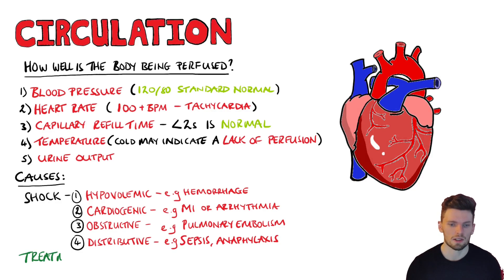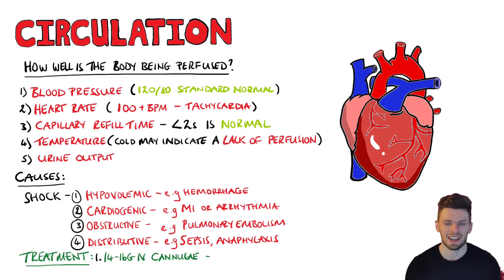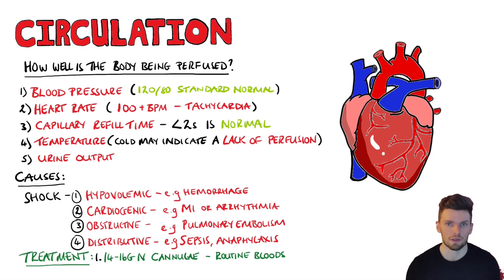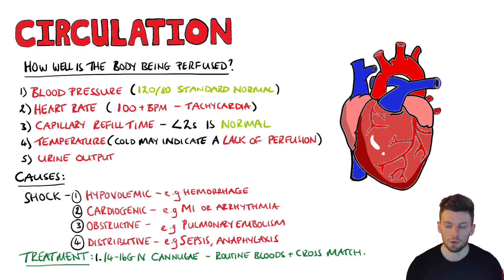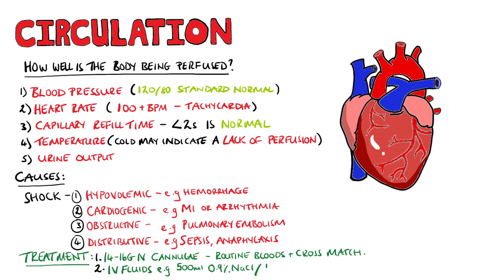Treatment depends on the underlying cause. Generally, 14 to 16 gauge intravenous cannulae are inserted and routine haematological, biochemical, coagulation, and microbiological investigations are performed, along with a crossmatch for potential transfusion. IV fluids — 500 millilitres of 0.9% sodium chloride or Hartmann's solution (also known as Ringer's lactate) — can be given over 15 minutes. In patients with cardiac failure, this is done slower or with less fluid.